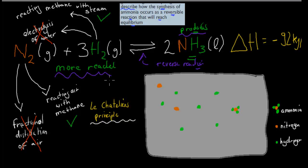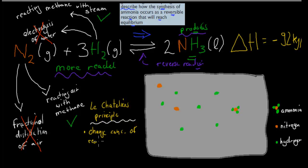So what could we do to shift the equilibrium to the right and make more ammonia? Remember Le Chatelier's principle? There are generally three things we can do: we can change the concentration of reactants or products, we can change the temperature, and we can change the pressure.